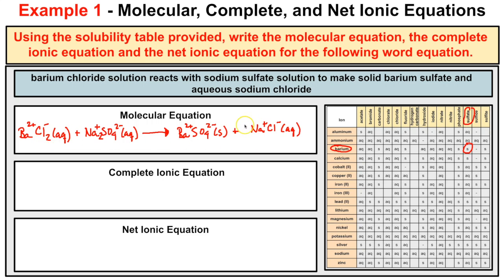Let's check that our chemical equation is balanced. We have two chlorines on each side, two sodiums on each side, one barium on each side, and one sulfate on each side — so the equation is balanced. This is our molecular equation. Note that molecular equations typically don't show ionic charges; we used those only to determine the correct chemical formulas.